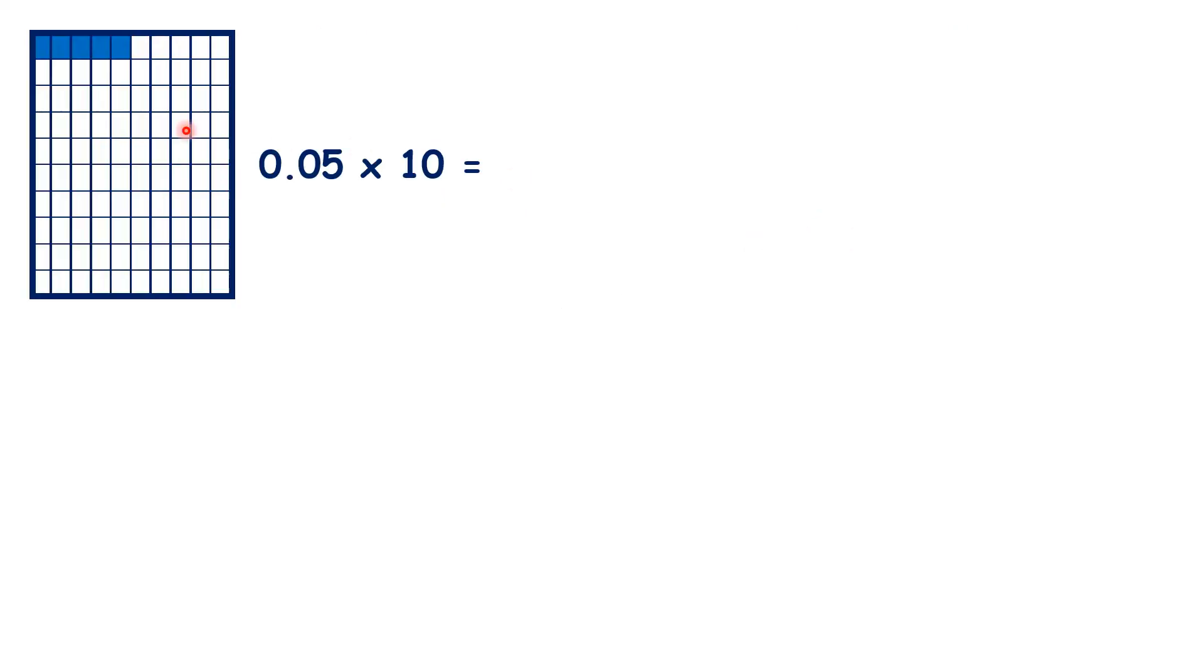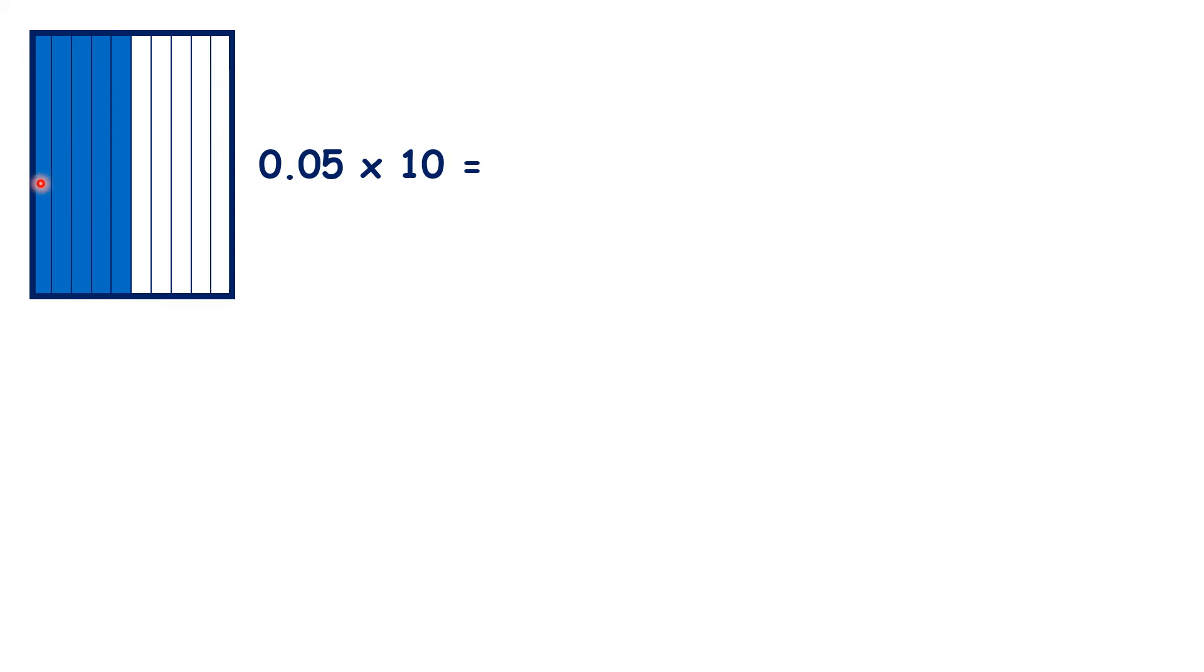Now let's show that 0.05 times 10 is 0.5. So here 0.05 or 5 hundredths of the large rectangle is shaded. If we times by 10, we now have 50 hundredths shaded. And 50 hundredths is the same as 5 tenths, which is 0.5.